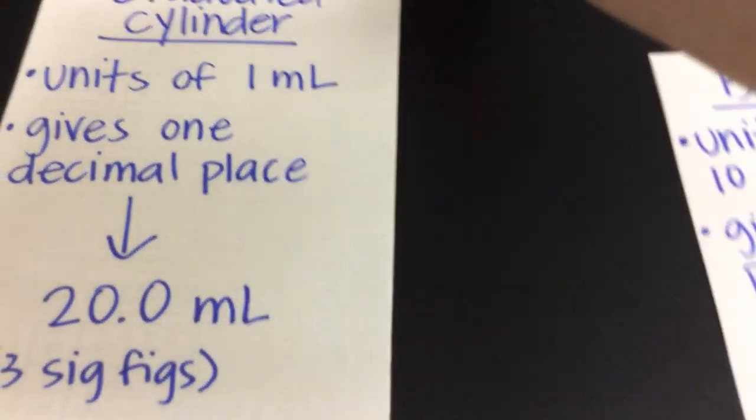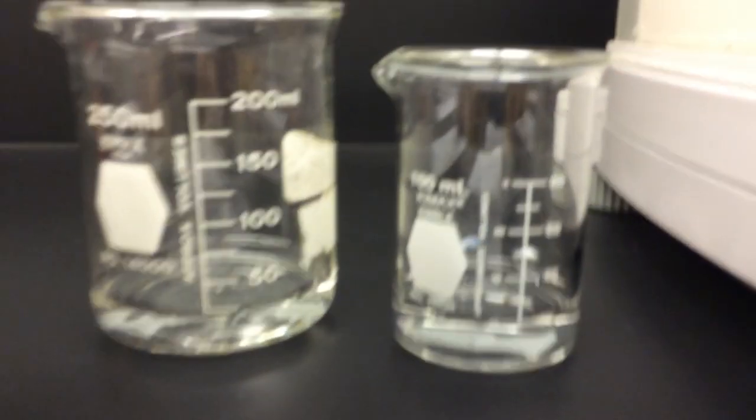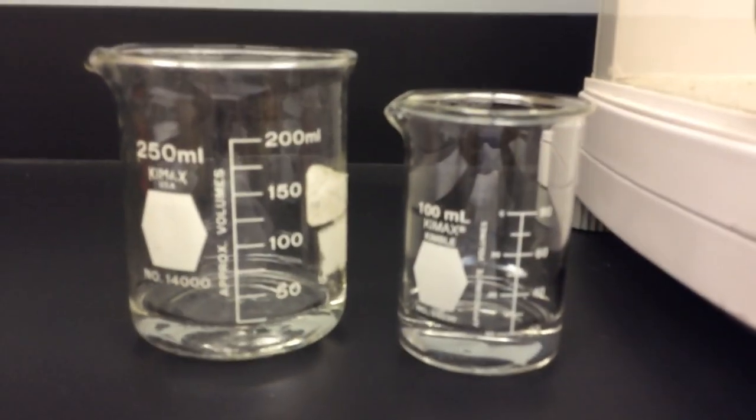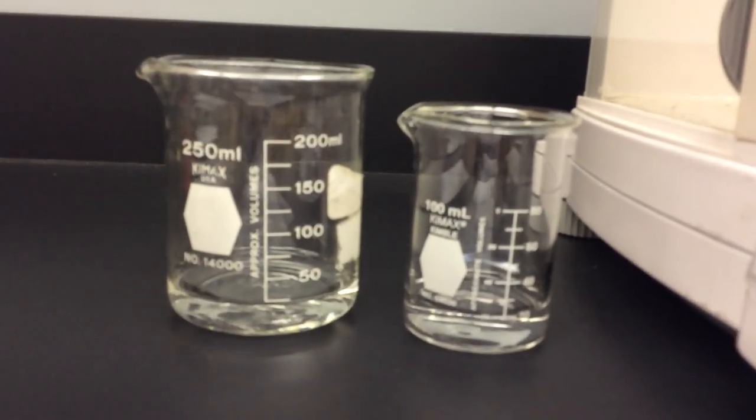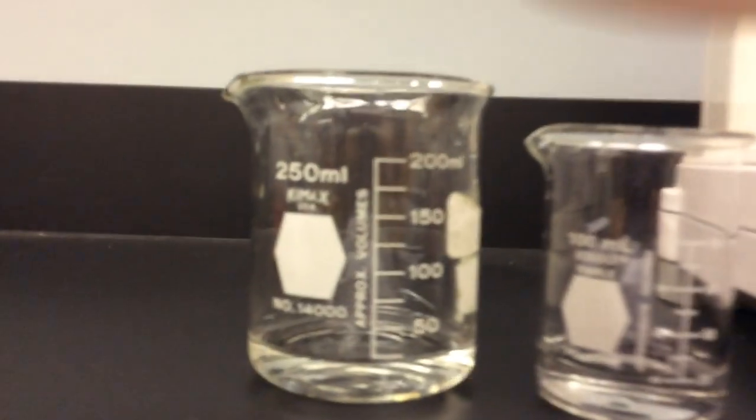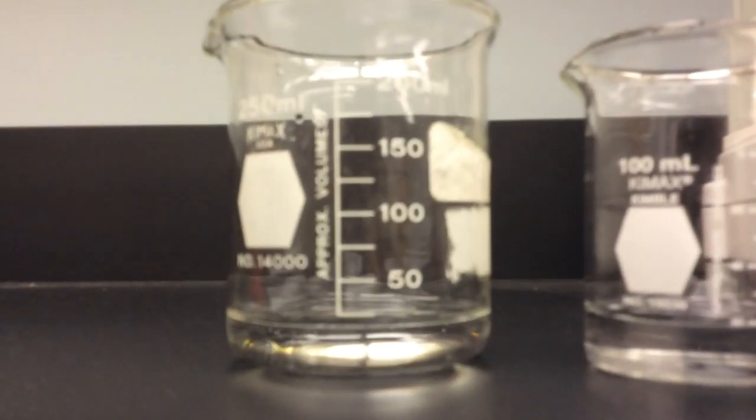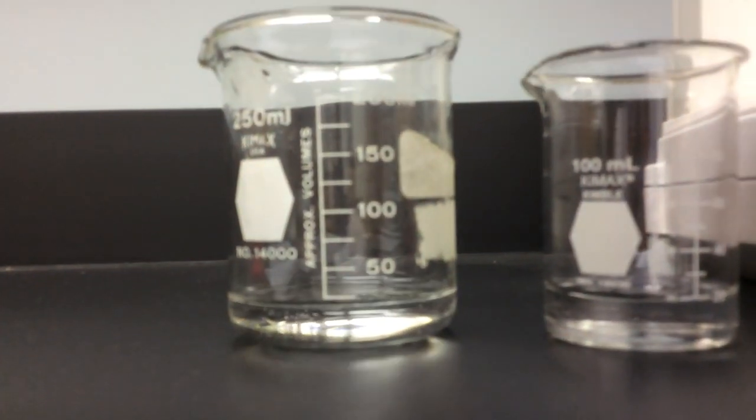Now let's move on to the beaker. The beaker is going to be the worst in terms of volume. And beakers, they vary. Some beakers measure in 10's, some beakers measure in 20's, some beakers measure in 25's. So I've got two examples here. This one on the left is in 25's. So if I want to try to measure 20 milliliters using a beaker that is in 25's, well, good luck.